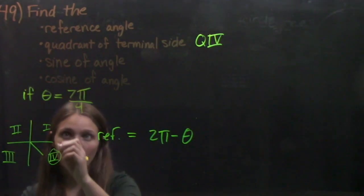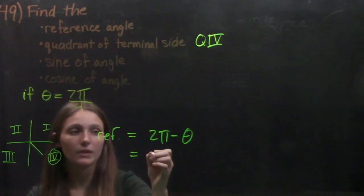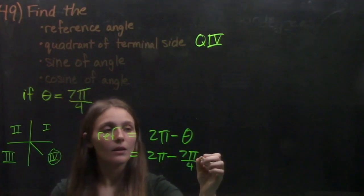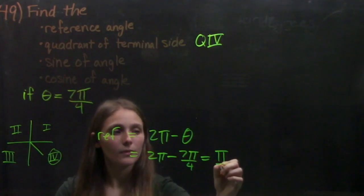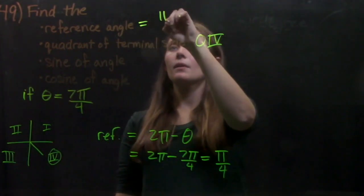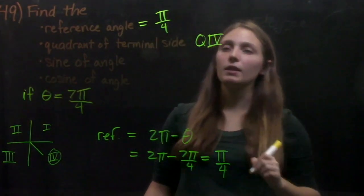So since our angle is 7 pi over 4, our reference angle is 2 pi minus 7 pi over 4, which equals pi over 4. So we can write that up here. Our reference angle is pi over 4.